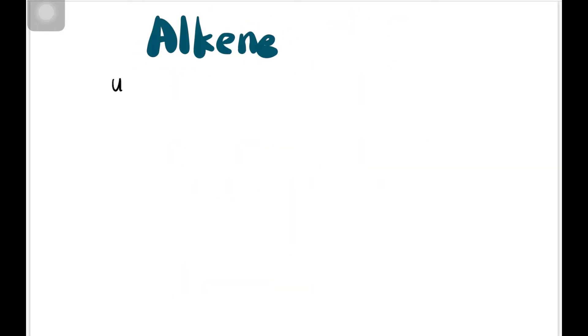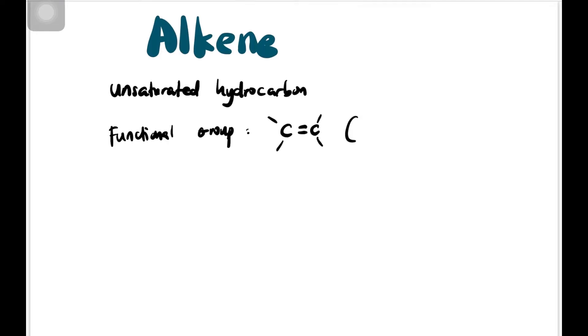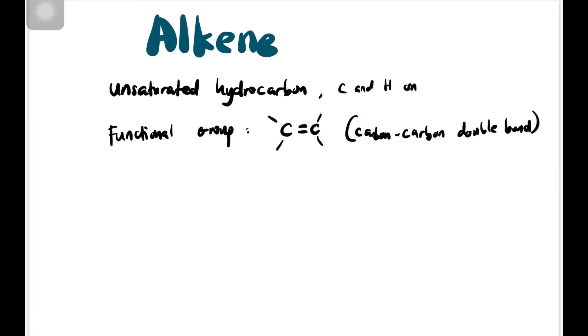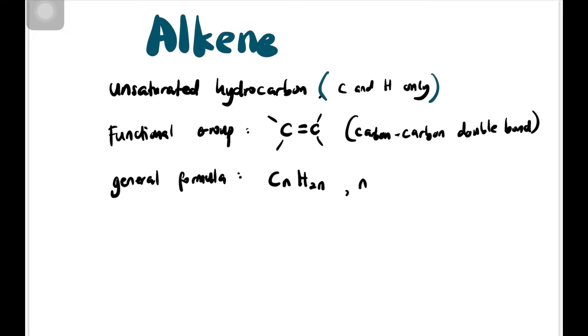Okay, jom kita start. Alkene adalah unsaturated hydrocarbons. There is the functional group C double bond C, carbon-carbon double bond. By the way, there cuma ada carbon and hydrogen only, sama macam alkene. CH only. Alkene, dia punya general formula adalah CnH2n, di mana N paling kurang mesti 2. Contohnya macam C2H4 and nama dia automatic ethene. E-N-E.